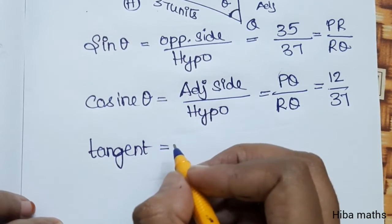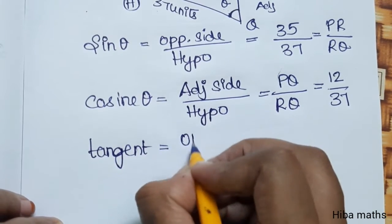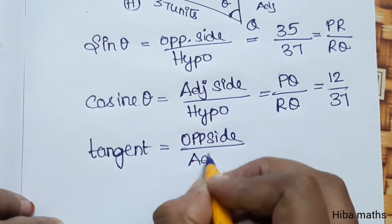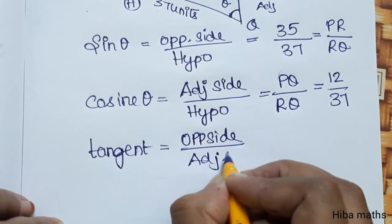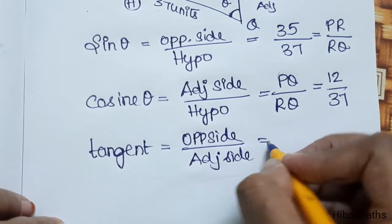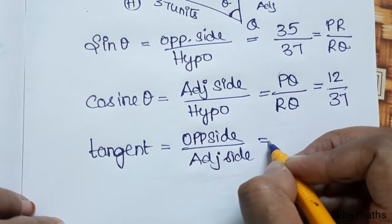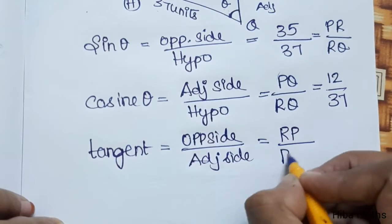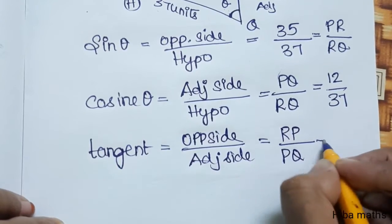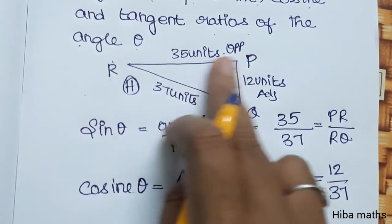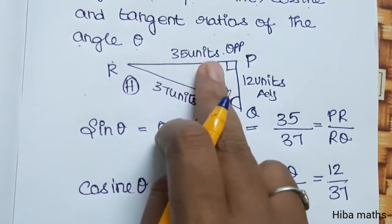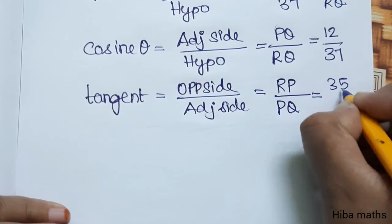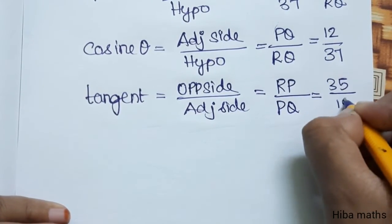Tangent is opposite side by adjacent side. The opposite side value is RP and the adjacent is PQ. RP value is 35 and PQ value is 12, so tangent theta equals 35 by 12.